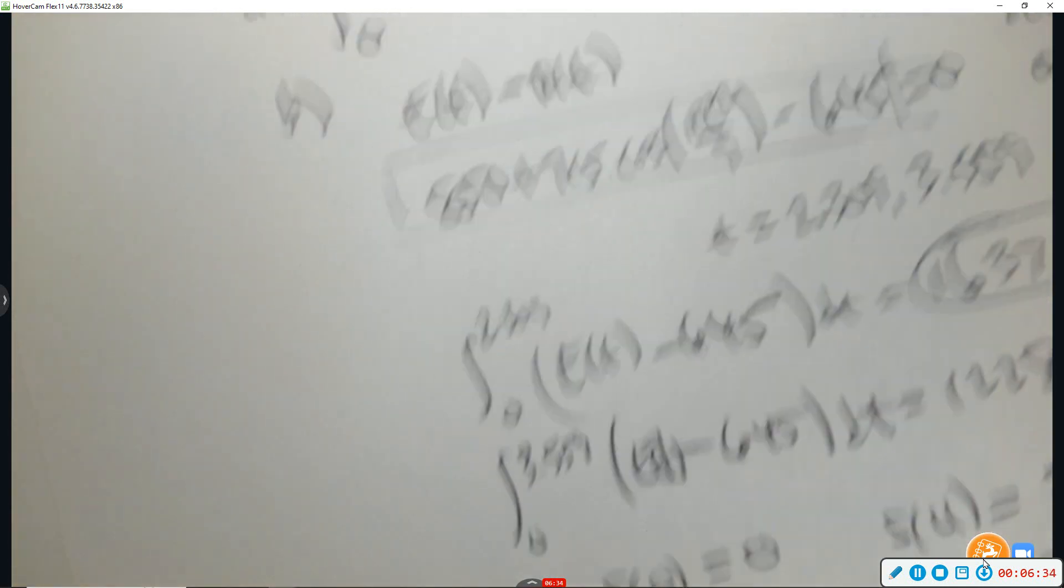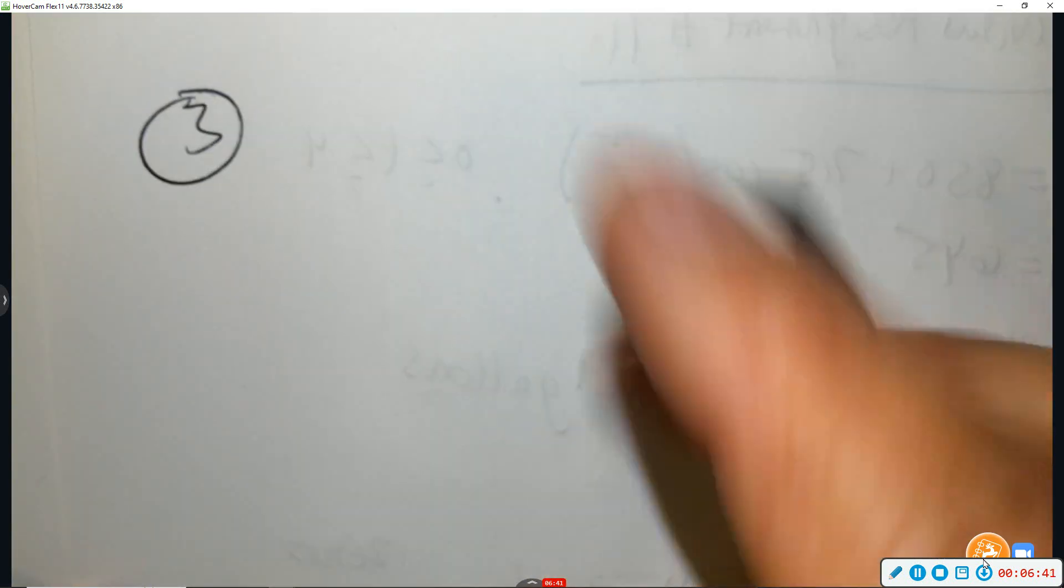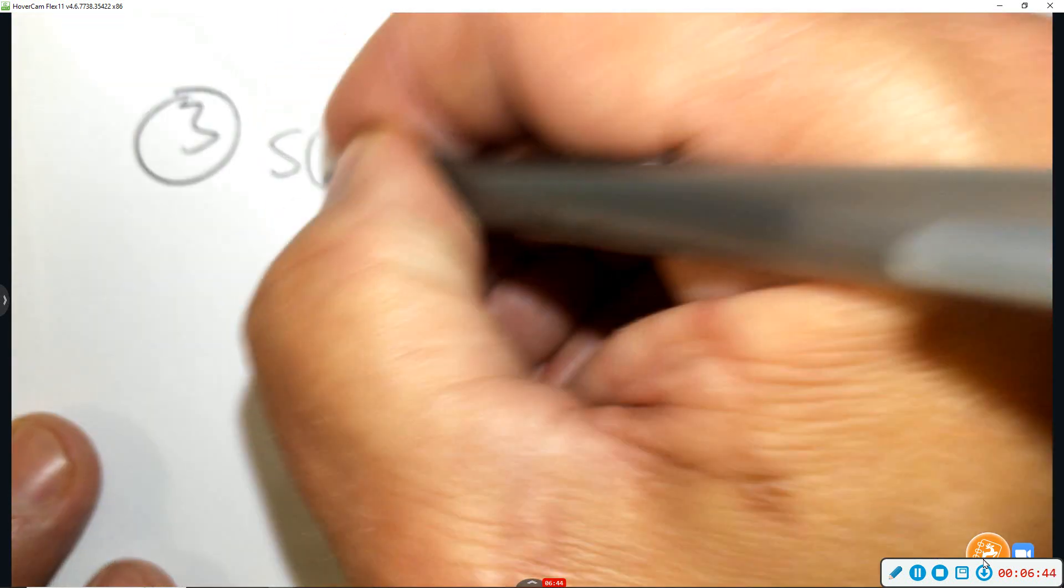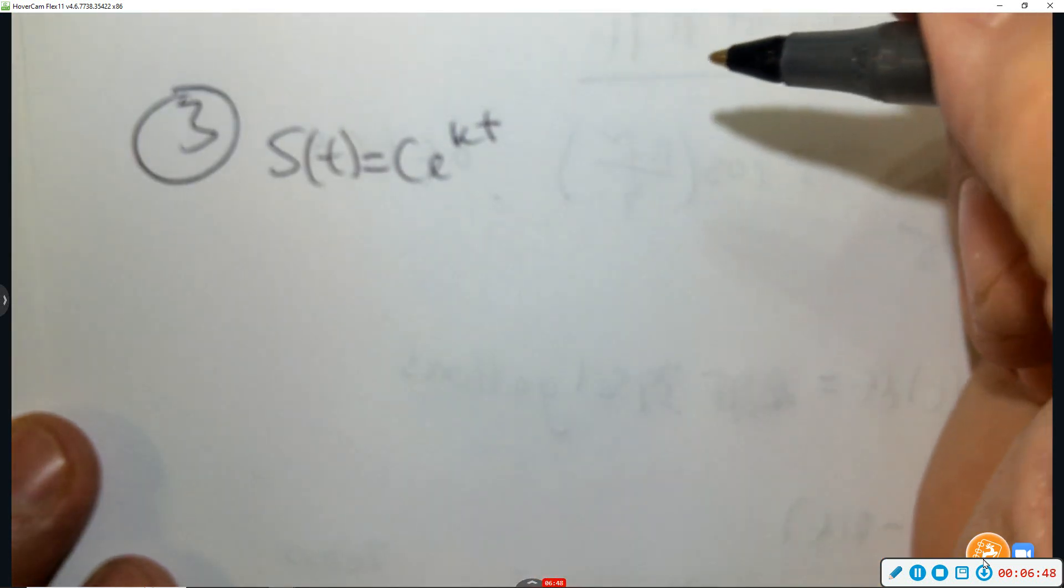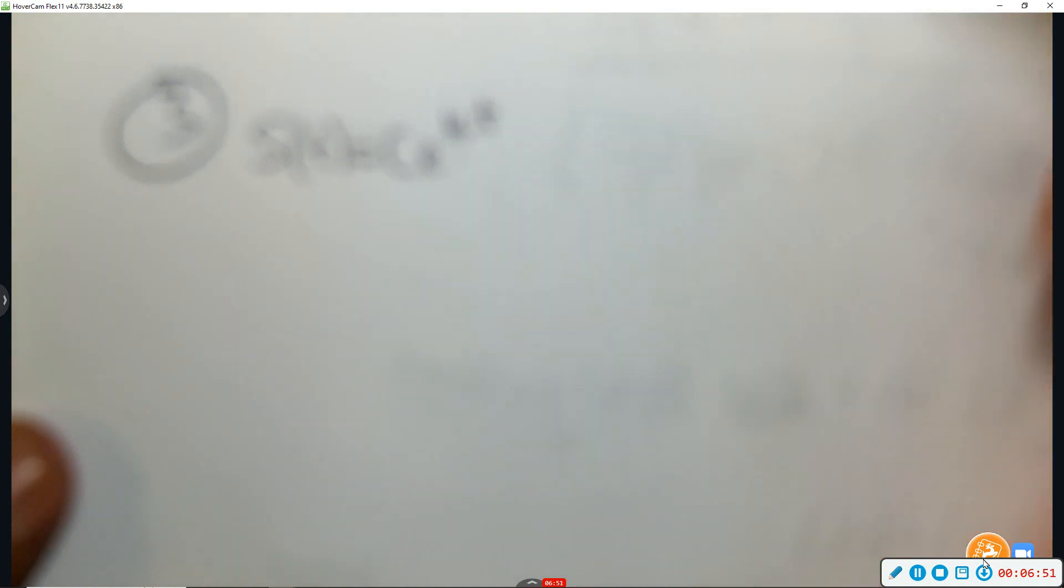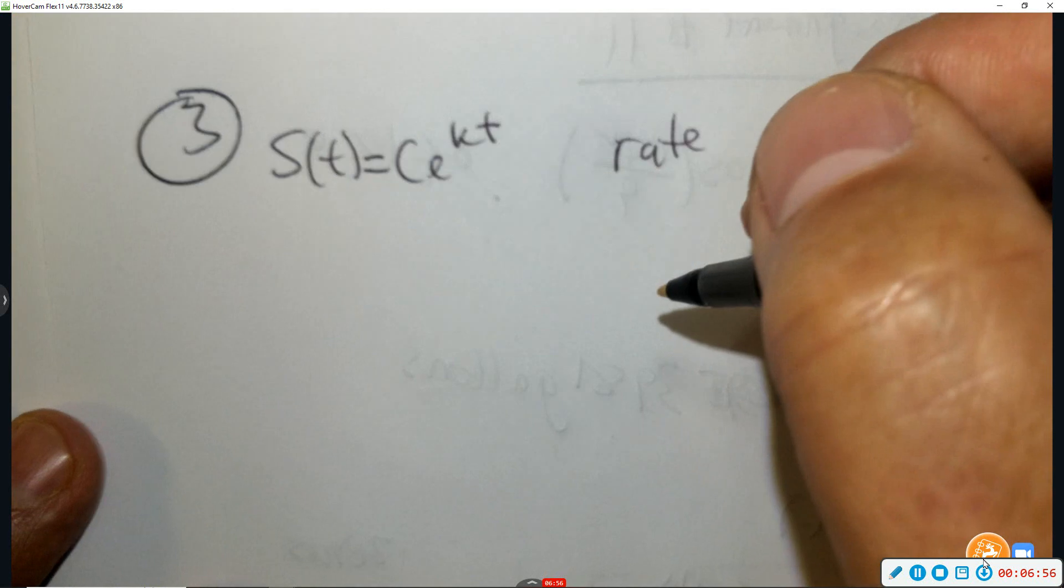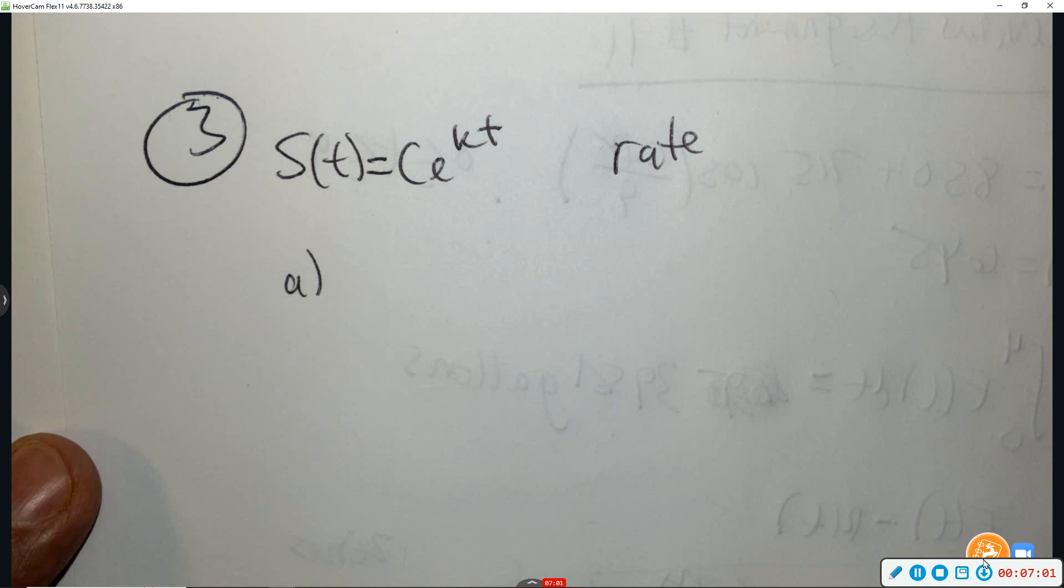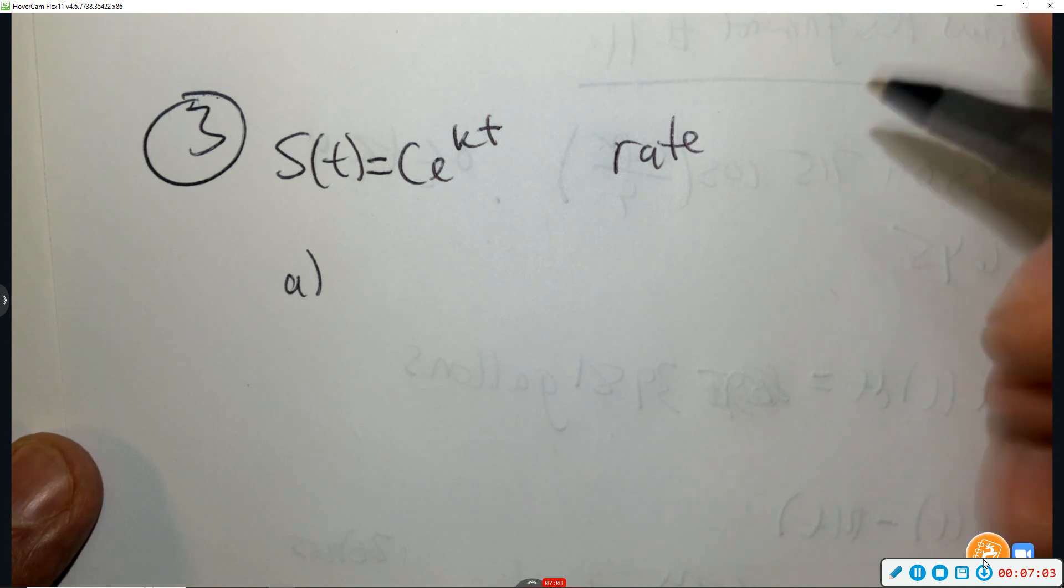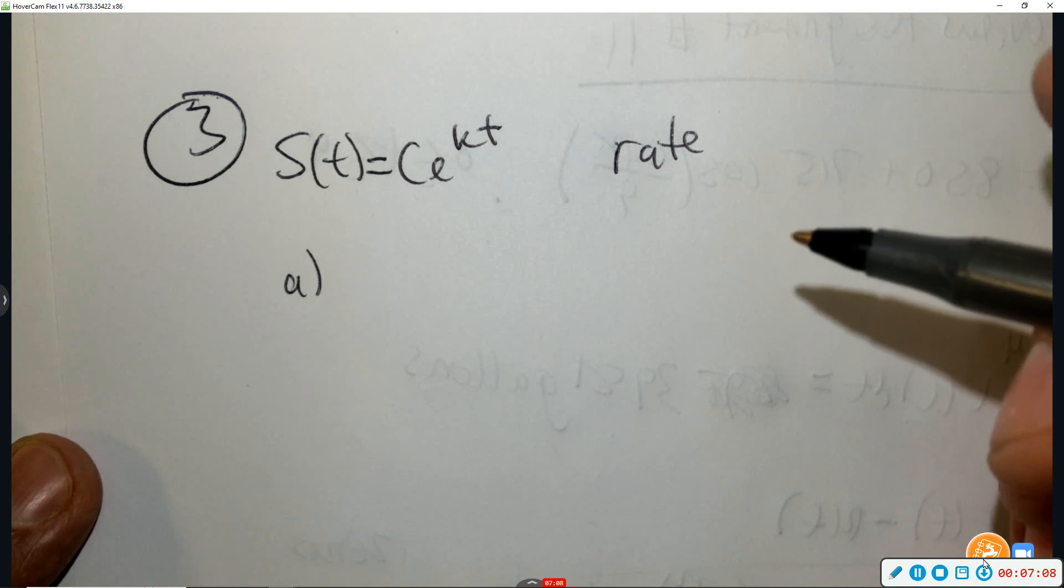All right, question number three. The rate of consumption of cola in the United States is given by this equation, where S is measured in billions of gallons per year. So S is a rate. And then part A says the consumption doubles every five years, and the consumption rate at the beginning of 1980 was 6 billion per year. Find C and K.